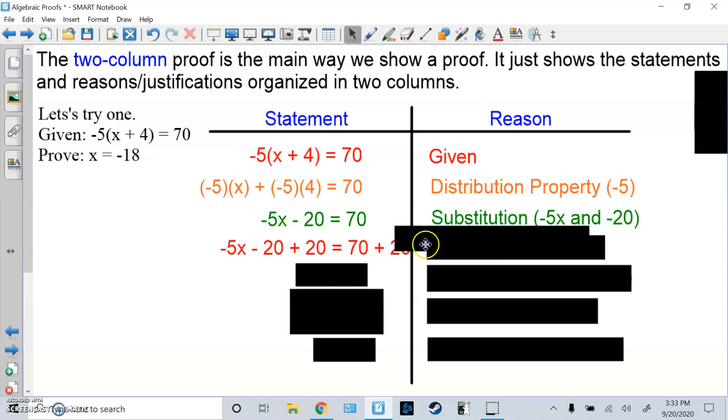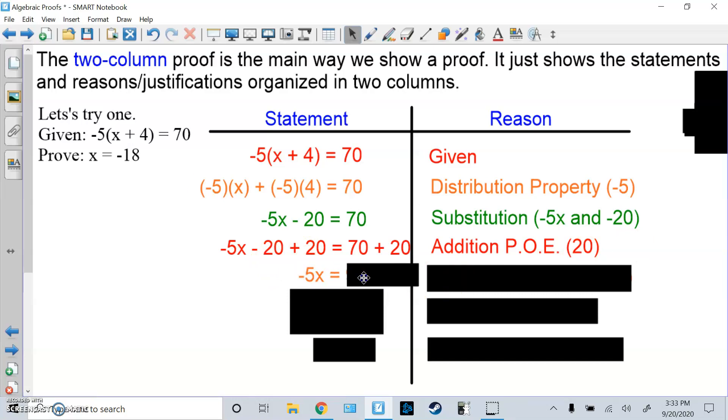From here, you'd add 20 to both sides. I'm going to show it like this. That's the addition property of equality. Then I'm going to do substitution again. I'm going to combine -20 plus 20 is 0, so this is -5X on the left side. 70 plus 20 is 90, so I did substitution.